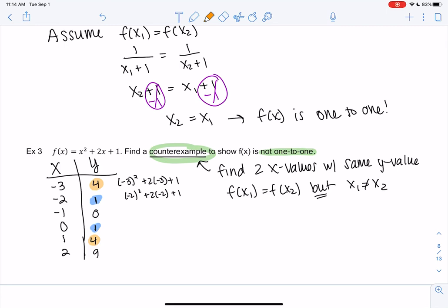So what do I mean by this? So what I'm saying is f(negative 2) equals f(0), because they're both 1. But the x values are not the same. So the y value of 1 has more than one x value. So that is a counterexample.